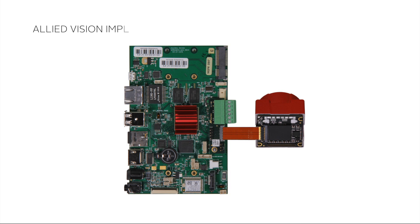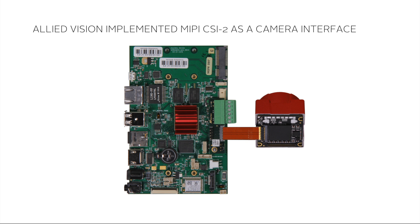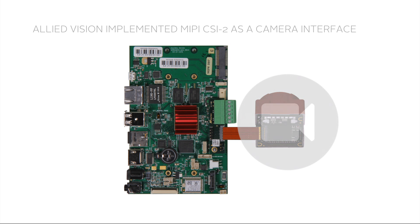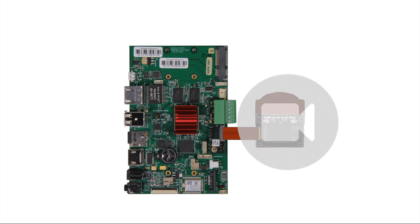With the new Allied Vision One product line, Allied Vision implemented MIPI CSI2 as a camera interface, creating a complete camera module with advanced image pre-processing capabilities that can be connected to an embedded board via a MIPI CSI2 interface.